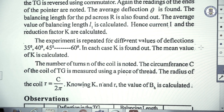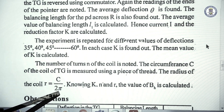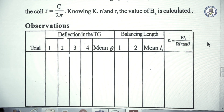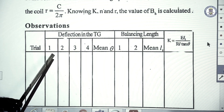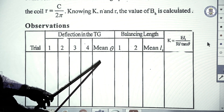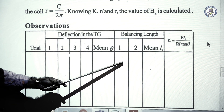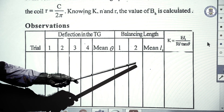For each rheostat position, we find the balancing length and the deflections. The number of turns N of the coil is noted, and the circumference of the coil is measured to calculate the radius. We get four deflections: for one position of the commutator, readings 1 and 2; when reversed, readings 3 and 4. The balance length for the initial commutator position is L1(a), and when reversed, L1(b); the mean is L1.